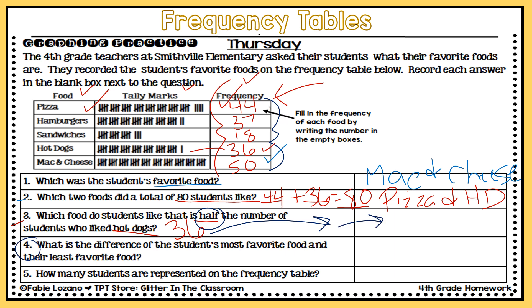Question four: what is the difference between the students' most favorite food and their least favorite food? The most favorite food is mac and cheese at 50, and the least favorite food is sandwiches at 18. Difference means I'm going to subtract, so when you take 50 minus 18 you'll be able to answer this box — I'll let you work on that.